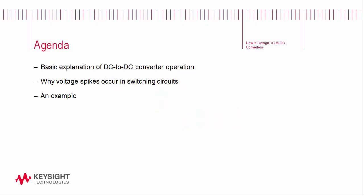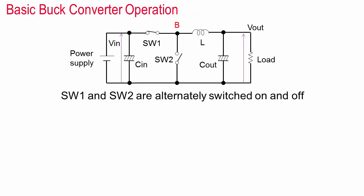First I'll explain the basic operation of a DC to DC buck converter. Then I'll discuss the basics behind why voltage spikes occur in switching circuits. Then I'll walk through an example showing how a layout can be modified to improve performance. At the end you'll be able to download the files that I have shown and try them out yourself. You'll be able to use these as a starting point or for ideas to apply to your own designs. Okay let's get started.